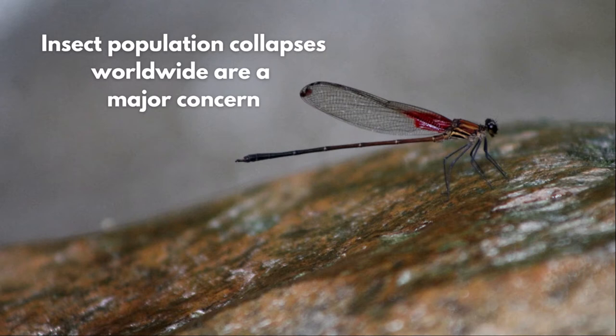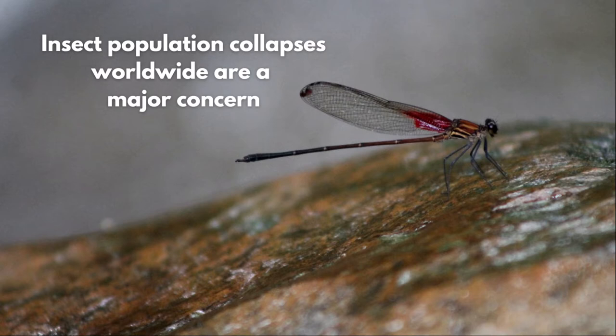That's shocking because we're so dependent on the web of life for our own survival, and insects are so important in that. The reasons for this decline include habitat loss, the intensification of agriculture — which is a main driver — as well as agrochemical pollutants, invasive species, and climate change. There's a whole range of factors involved in the decline of insects.